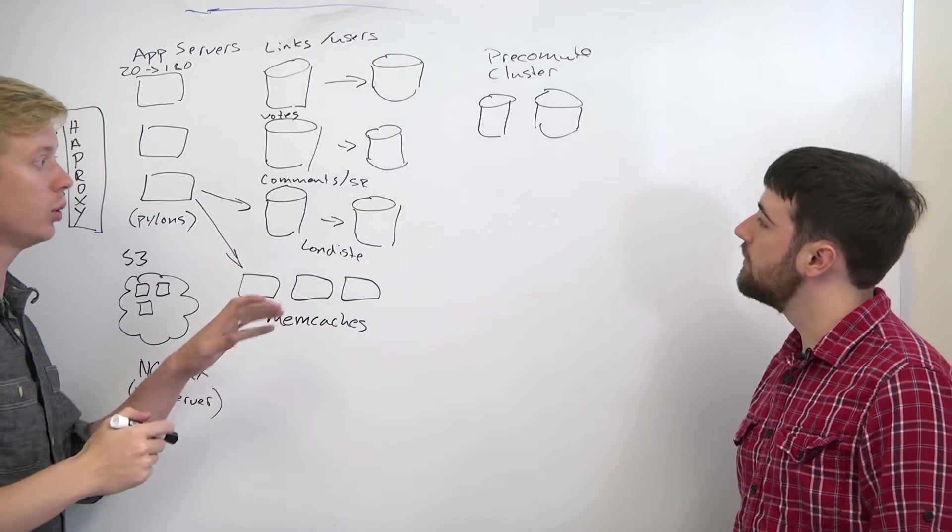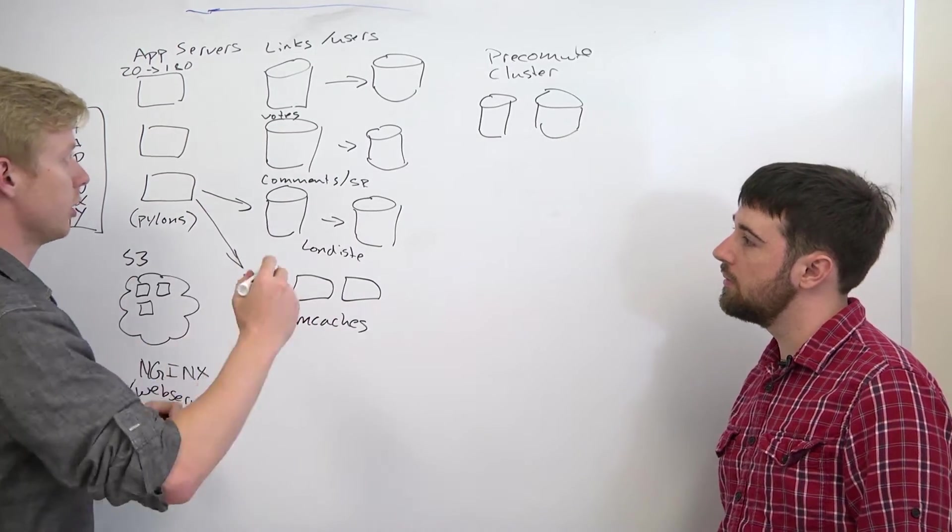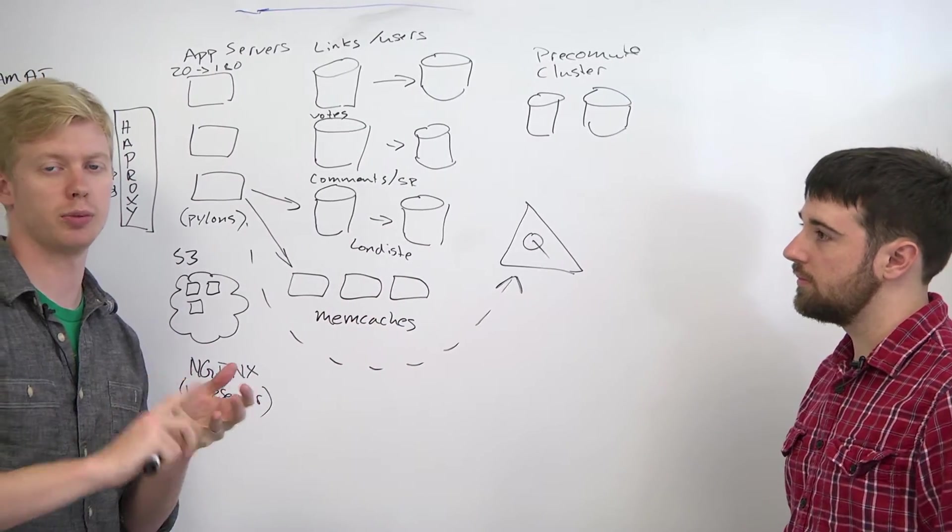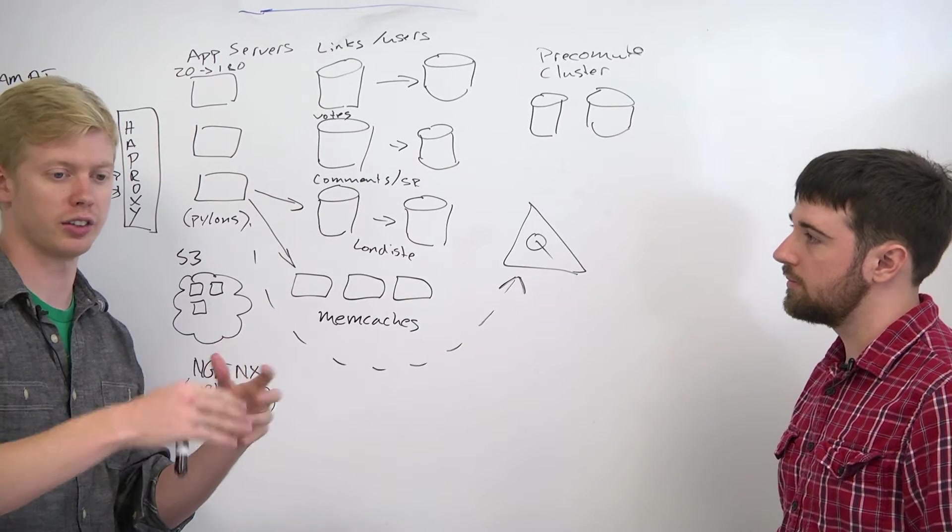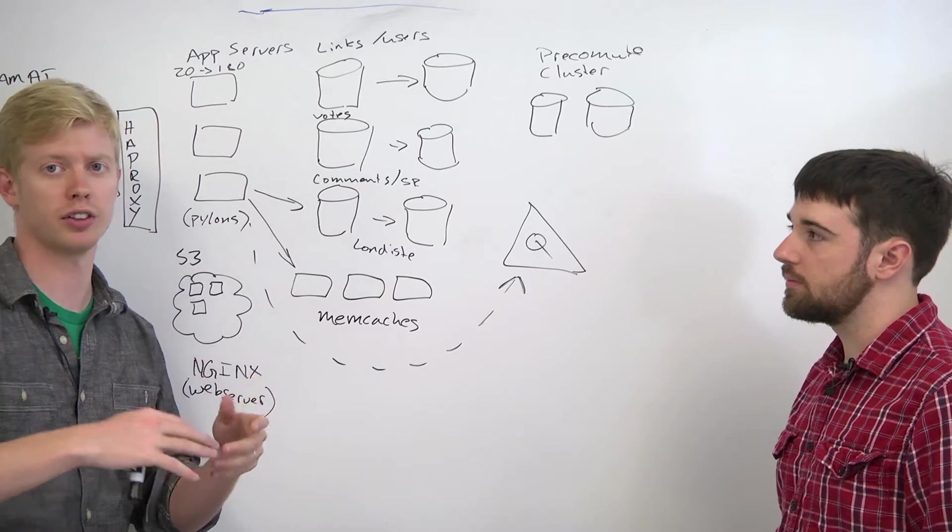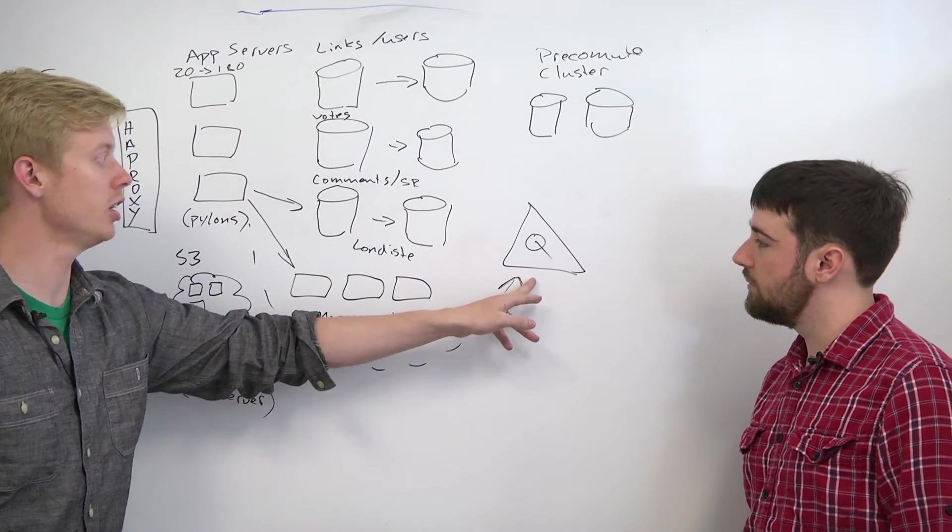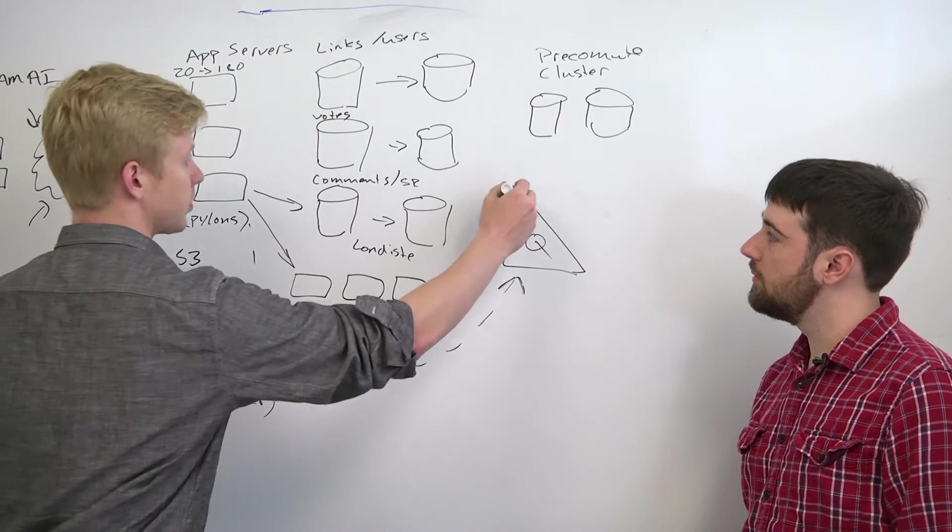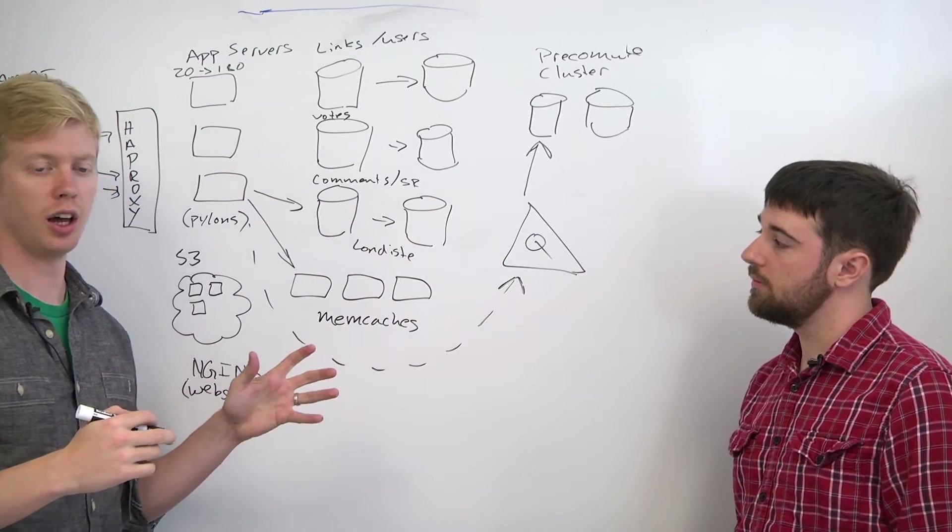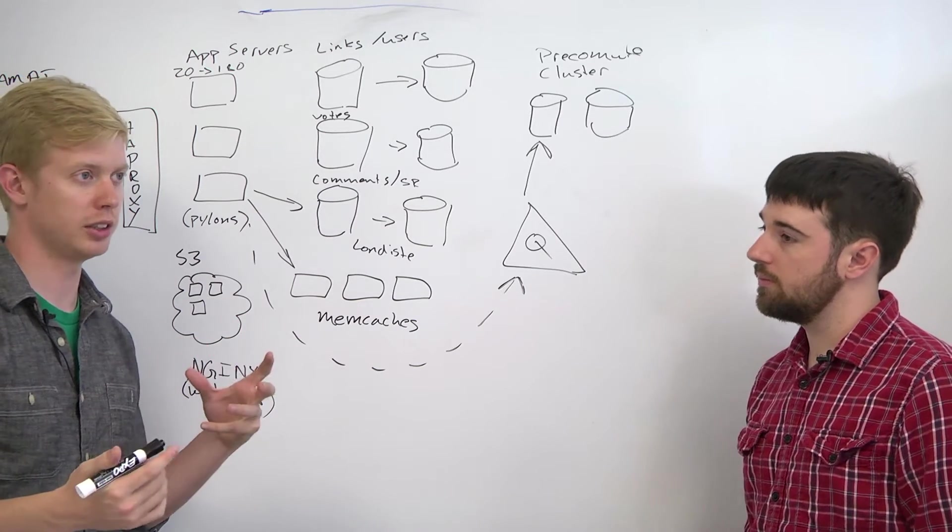And whenever you would submit a link to Reddit or a vote, we would submit a job to this queue. The job would be something like update the front page or update this person's liked page or all these different things. Like a vote affects the front page, it affects the new page, it affects your liked listing, all that sort of stuff. We'd put this job in a queue, and then what the queue would do is it would say recompute that listing's front page or recompute that listing's rising page or recompute that user's liked page.